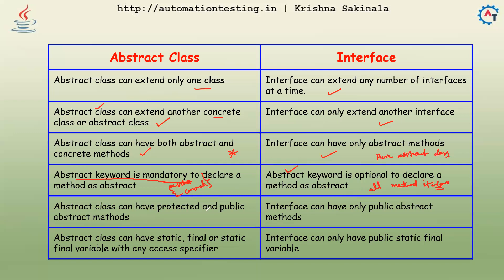An abstract class can have protected and public abstract methods, but an interface can have only public abstract methods. An abstract class can have static, final, or static final variables with any access modifier, but an interface can only have public static final variables.